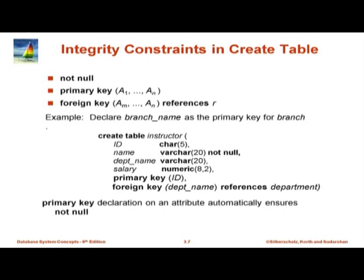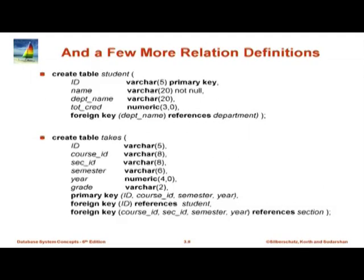So we can add constraints. Here is a better version of that same table. Id char(5) is the same but we are declaring it as a primary key. Name varchar(20) as before but now it is declared as NOT NULL. And for department_name we now know it must be a foreign key, so we say FOREIGN KEY (department_name) REFERENCES the department table which is separately defined. Note that if you declare something as a primary key it is automatically NOT NULL, so id cannot be null if it is declared as primary key.